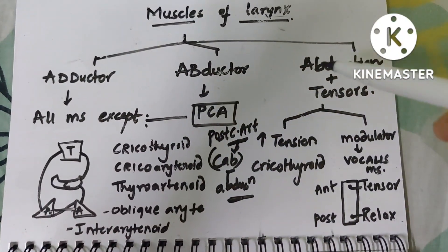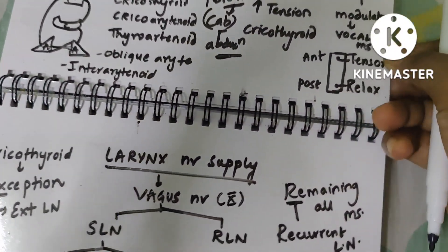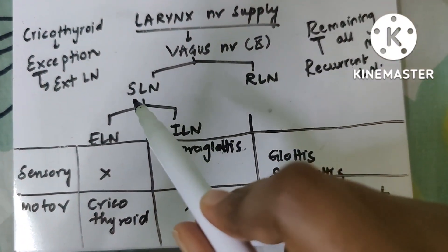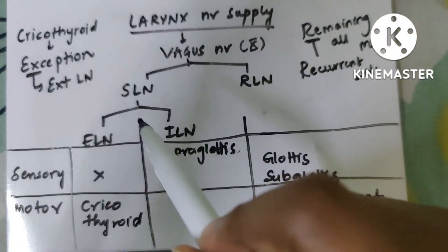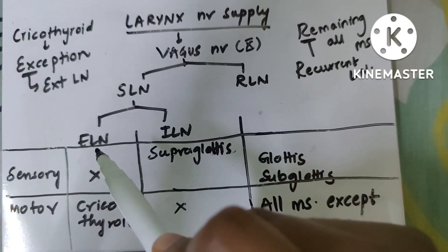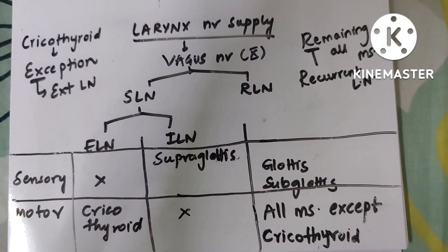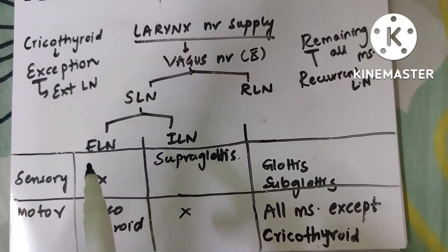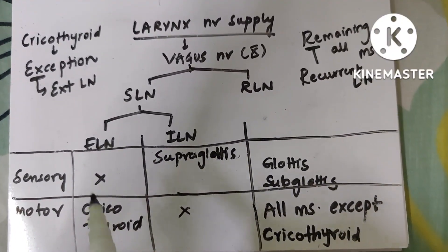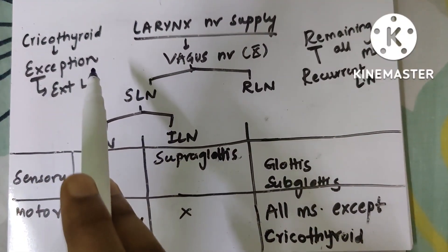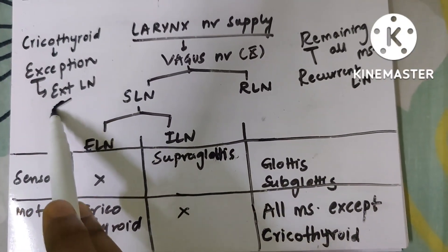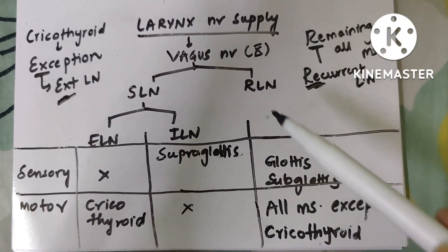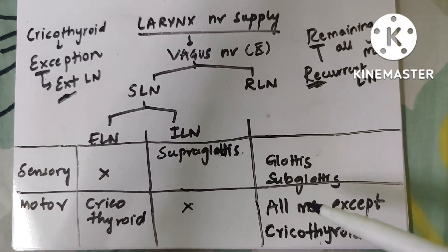This completes the important muscles of the larynx. Now for the laryngeal nerve supply: the vagus nerve divides into the superior laryngeal nerve and the recurrent laryngeal nerve. The external laryngeal nerve has no sensory function — it supplies only the cricothyroid muscle, which is the exception. All remaining muscles except cricothyroid are supplied by the recurrent laryngeal nerve.